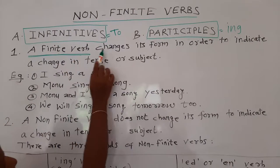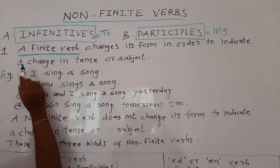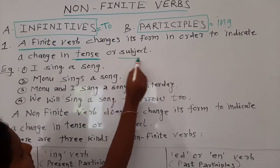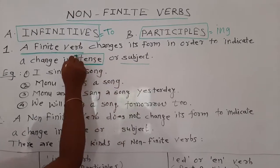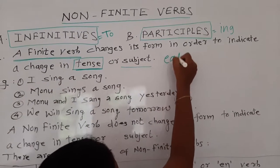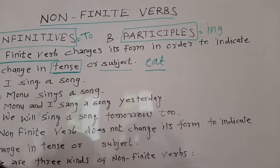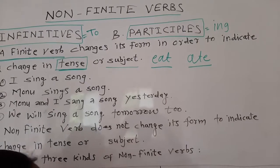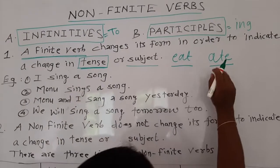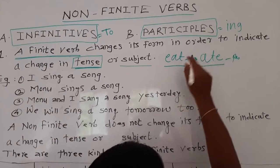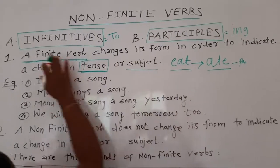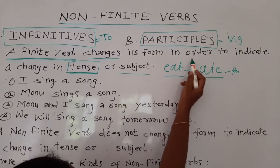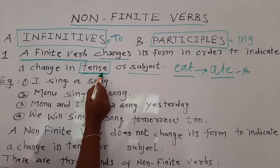A finite verb changes its forms in order to indicate a change in tense or subject. For example, if I say 'eat,' you can imagine it is present tense. But if I say 'ate,' then you can understand it is past tense — it gets changed. So that is the finite verb: it changes its form to indicate the change in tense.